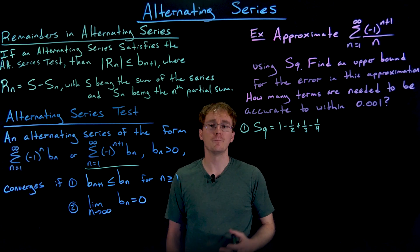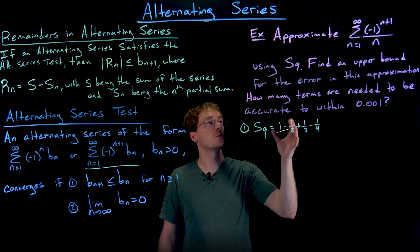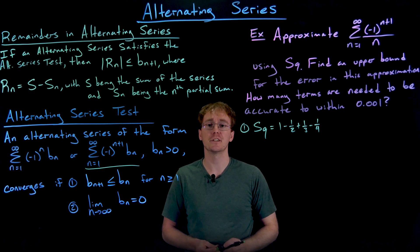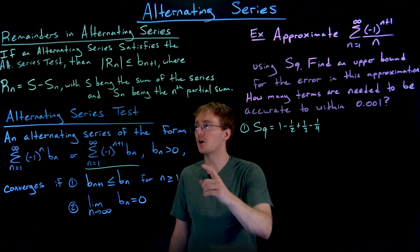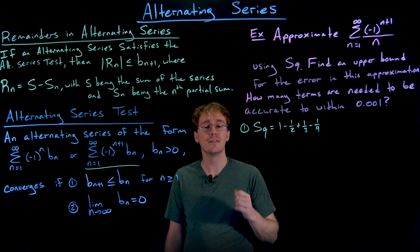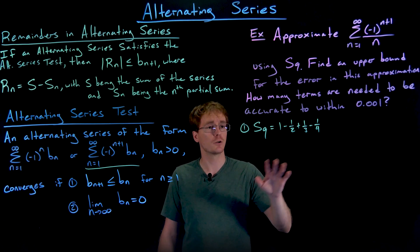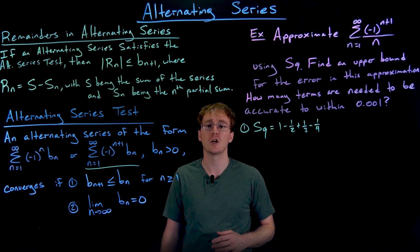The first part of this problem is pretty straightforward. We're trying to approximate the sum of our series. This is our alternating harmonic series, and we know by the alternating series test that it is going to converge. So it's worth trying to approximate the sum of the series.